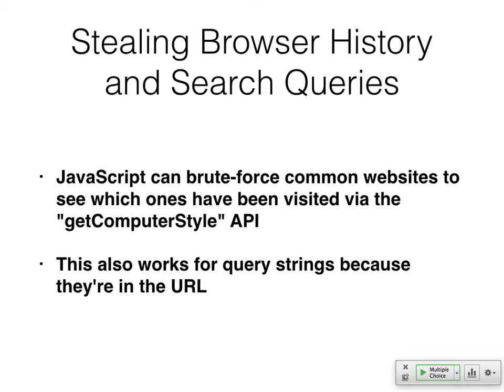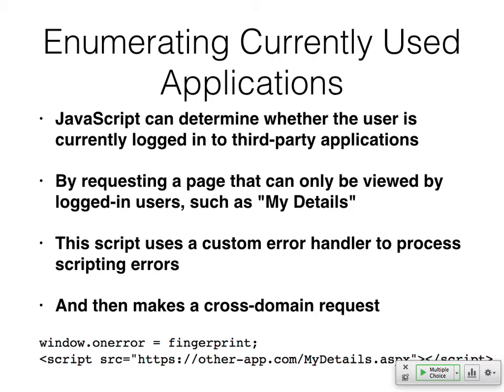If you want to steal browser history or queries, you can brute force common websites and common query strings and look for getComputedStyle to see the color of those links — to see if they have been visited or not. You can find websites and queries because the query goes in the URL: google.com?q equals whatever you're searching for. So I can't explicitly know what you've been searching for, but I can try a number of guesses, and it all happens locally in your browser. Browsers are now super fast, so I can try thousands and millions of guesses locally.